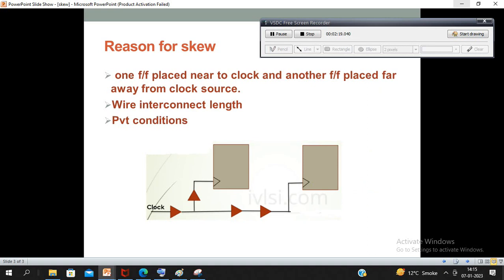Next will be PVT conditions. So what happens exactly is PVT conditions are like process, voltage, and temperature. These are not constant across the chip actually. So what happens sometimes is we might have different PVT conditions in launch path and capture path.